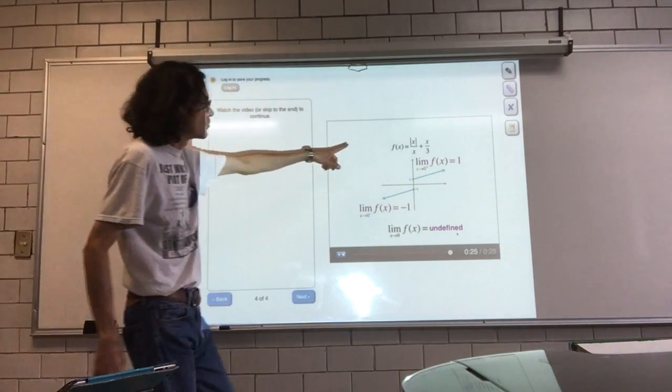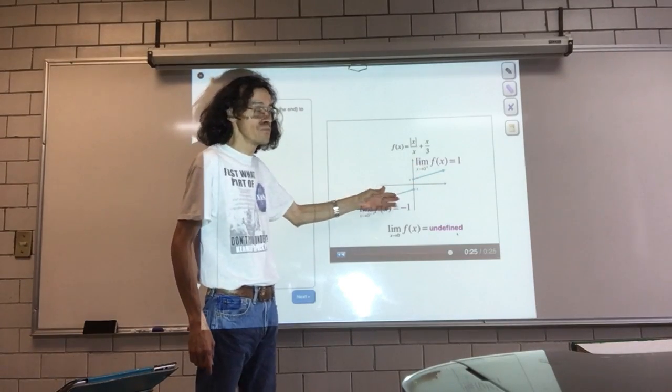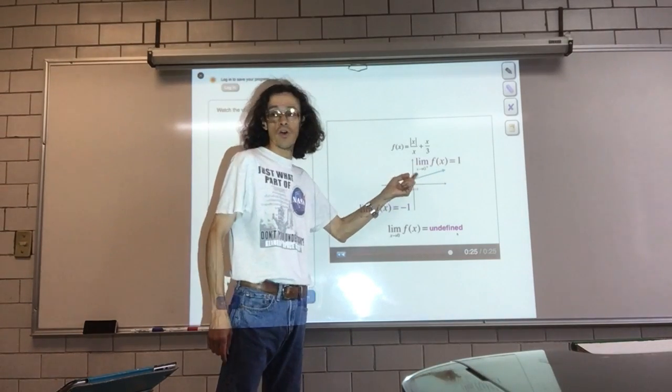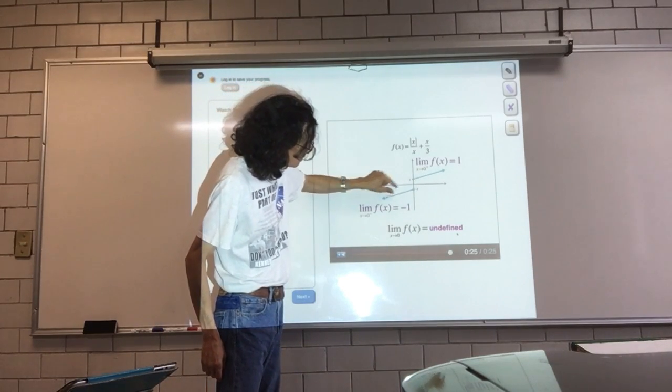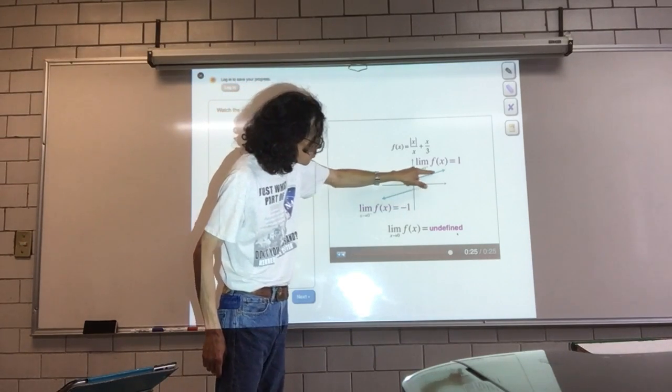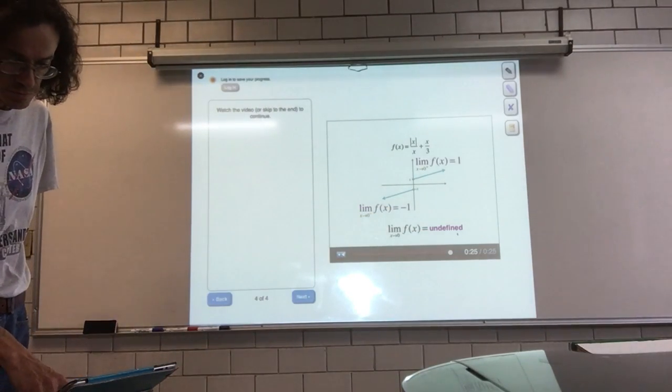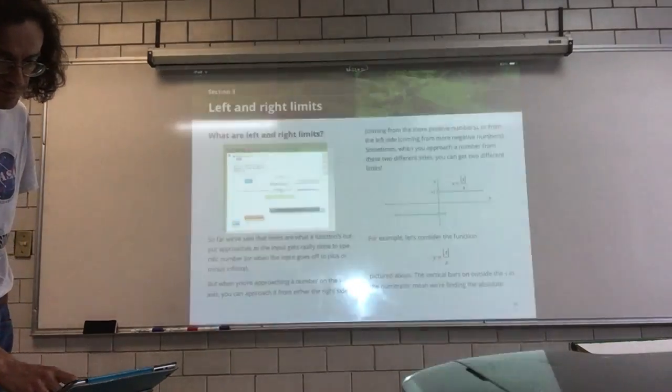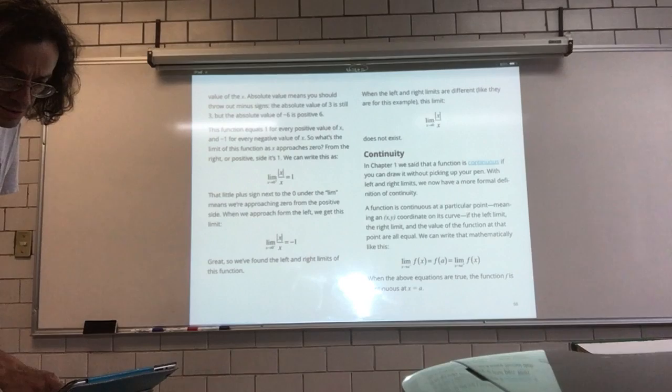Esa función tiene unos límites. Uno desde la izquierda y otro desde la derecha. Uno tiene un límite, aunque pareciera que hay algo que podría negar. No hay nada. No está definido. Bien. Vamos a la siguiente parte.